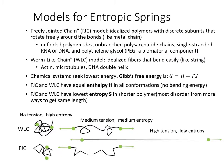We consider two models for entropic springs. The freely jointed chain (FJC) model is an idealized polymer with discrete subunits where the angles between subunits are random — like a chain of paper clips where the flexible joints mean it doesn't care what shape it takes. The folded-up shape has higher entropy and lower energy, so it is preferred. This model applies to unfolded polypeptides, unbranched polysaccharide chains, single-stranded RNA or DNA, and artificial polymers like polyethylene glycol, which is a component of many biomaterials.